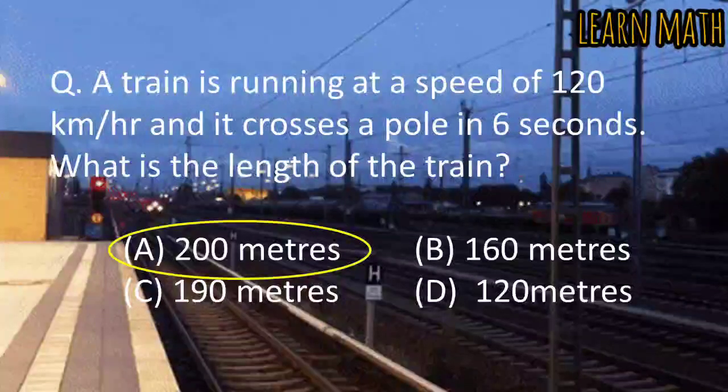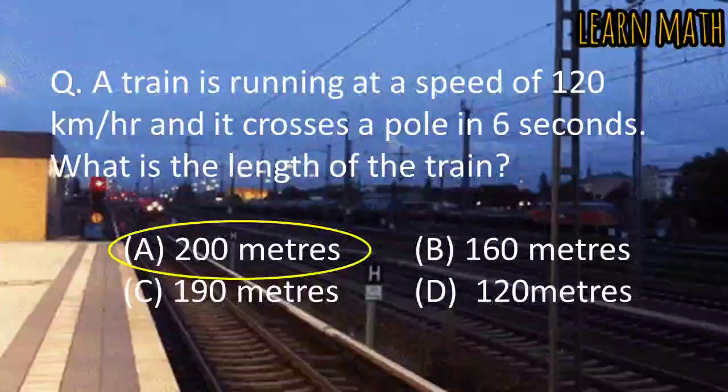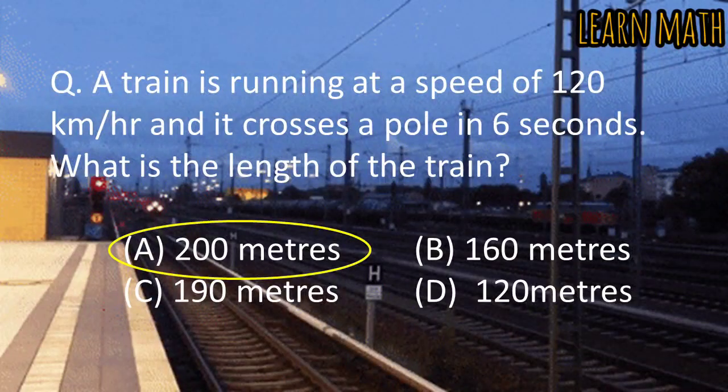So, the length of the train is 200 meters. Option A is the correct option. Thank you so much.